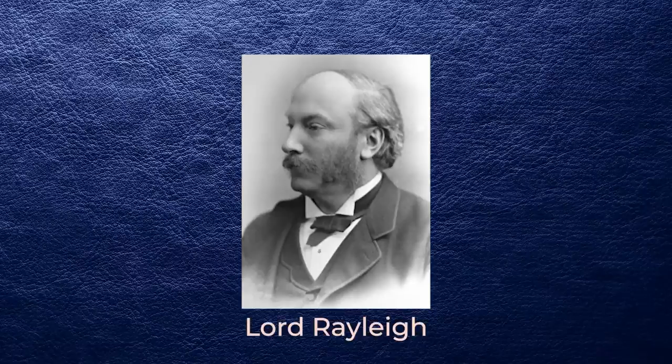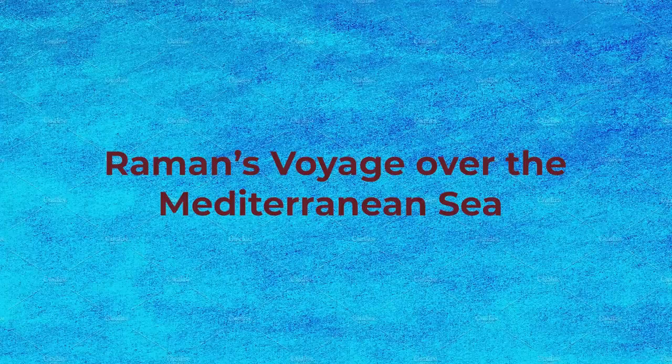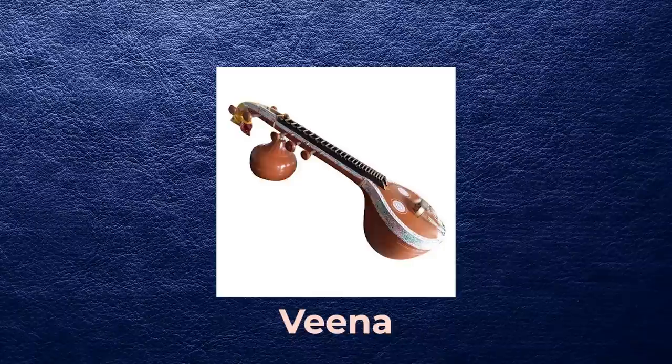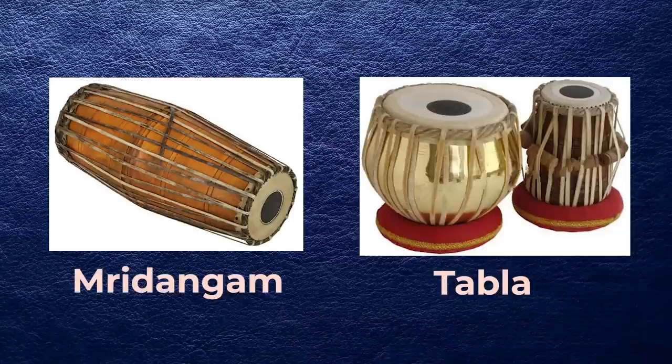So where does CV Raman come in? Chandrasekhar Venkat Raman was an Indian physicist who was already pretty well established in India during the 1920s. He was a professor of physics at the Rajabazar Science College under the University of Calcutta, and his research was primarily in the field of acoustics — particularly stringed instruments like the veena and percussion like the mridangam and the tabla.